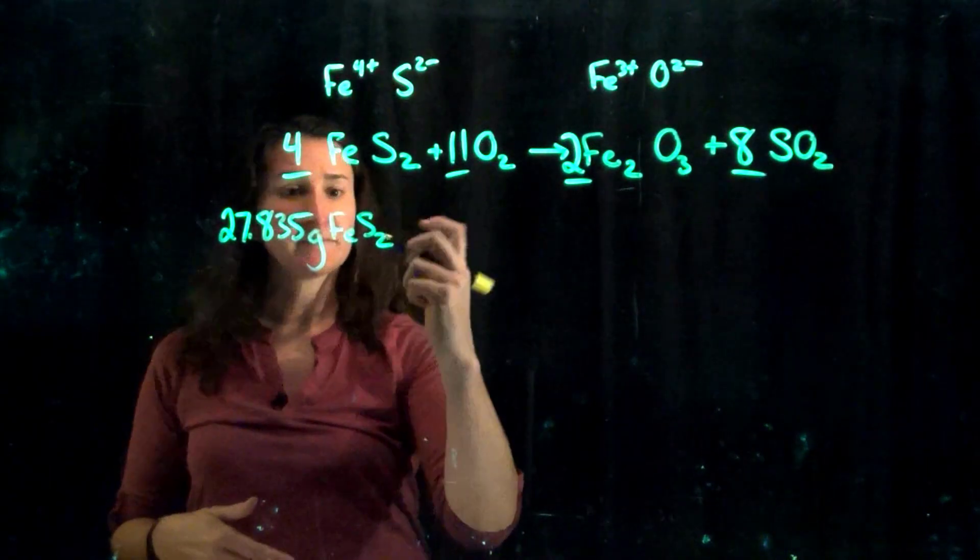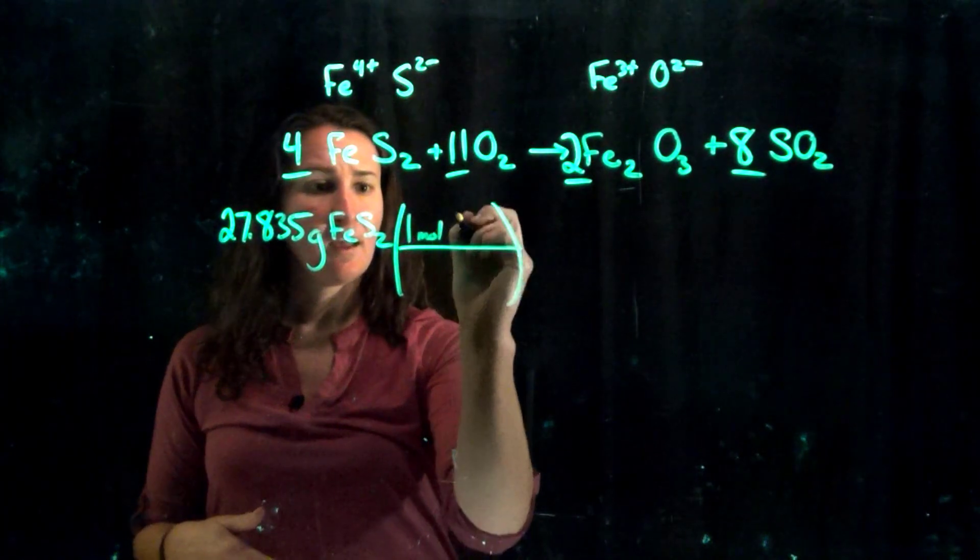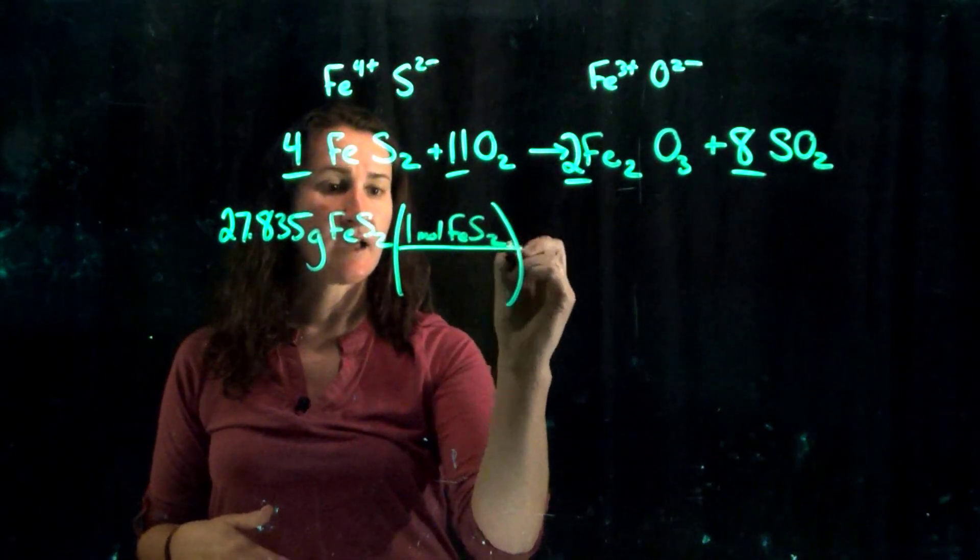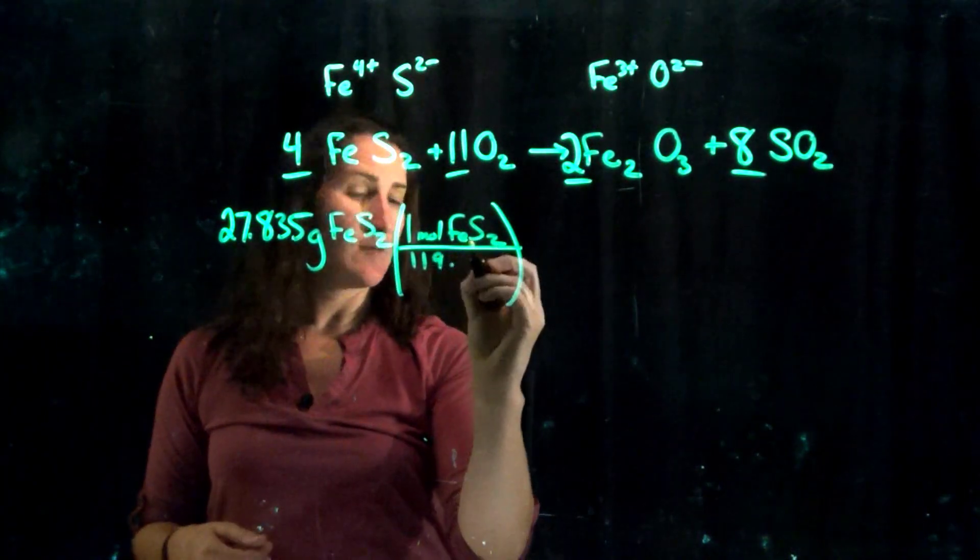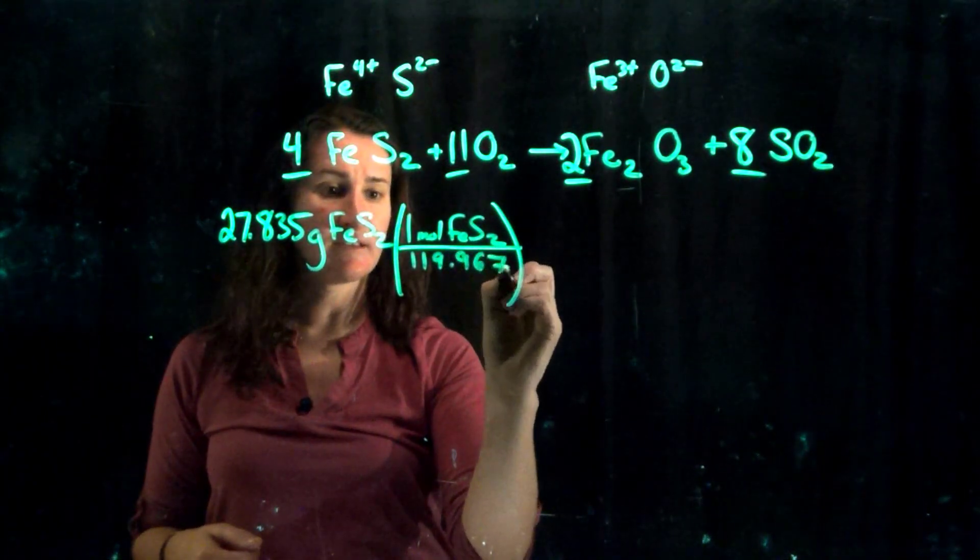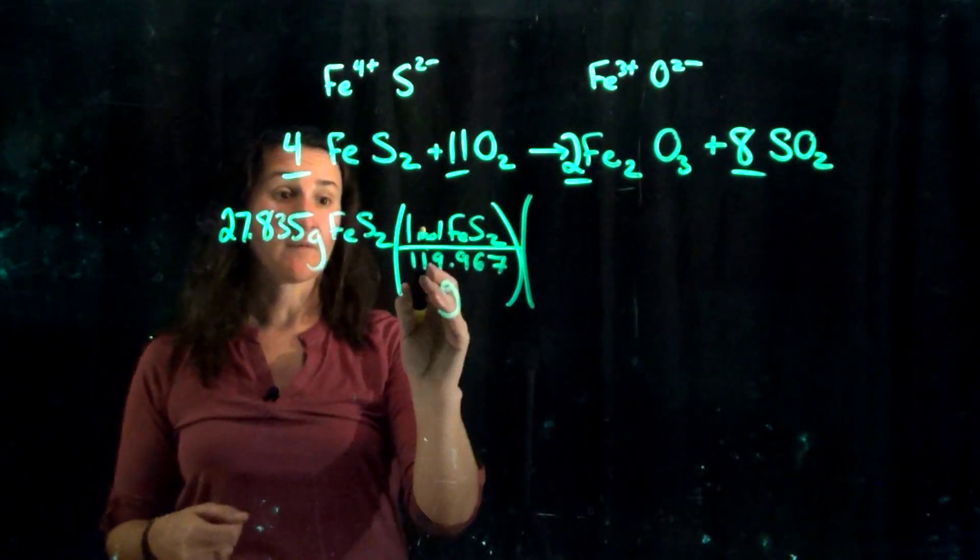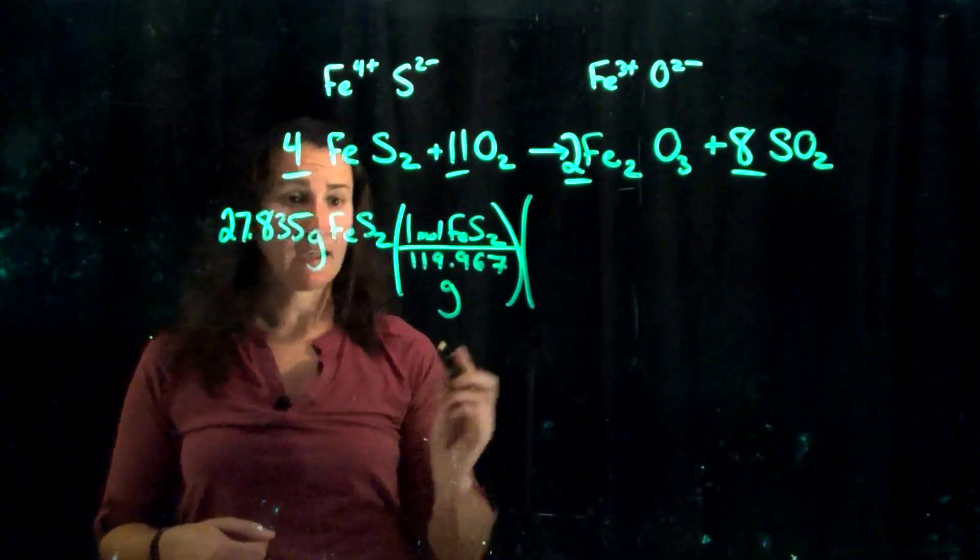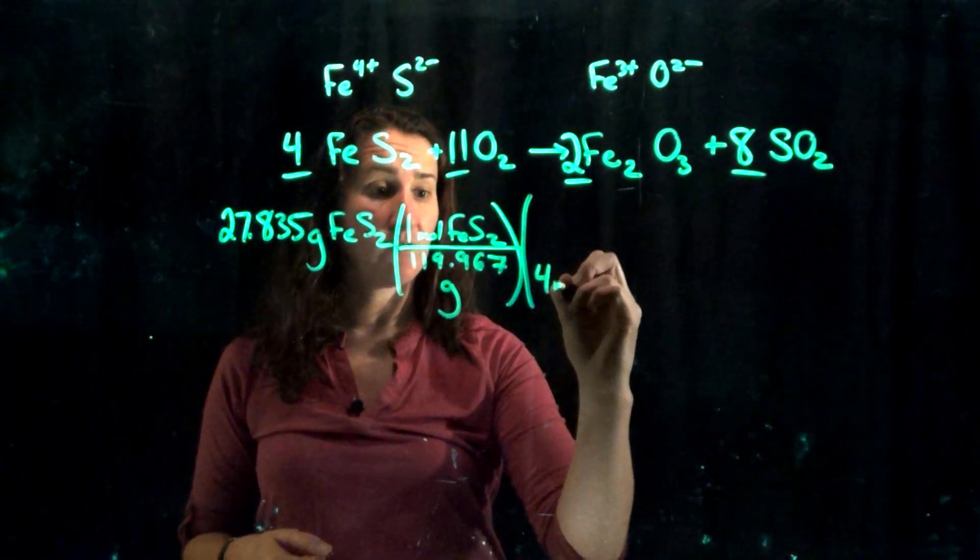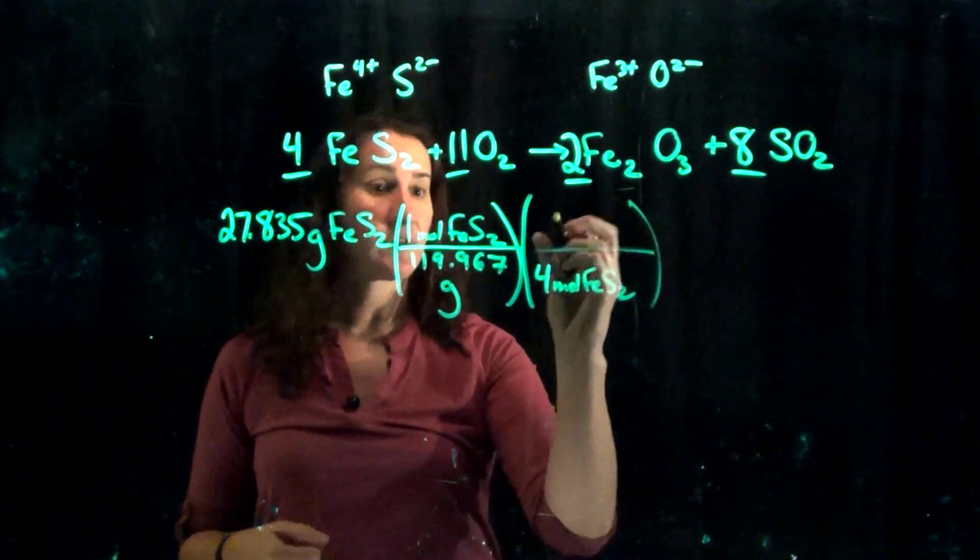So let's convert this. First thing we need to do is grams to moles. So in one mole of iron for sulfide, what's my weight? My weight is 119.967 and that's grams. Then I need to go from moles of iron for sulfide to moles of sulfur dioxide. So I have four moles of iron for sulfide for every eight moles of sulfur dioxide.